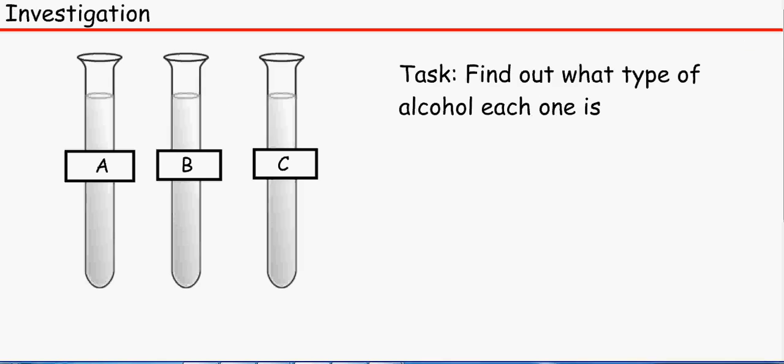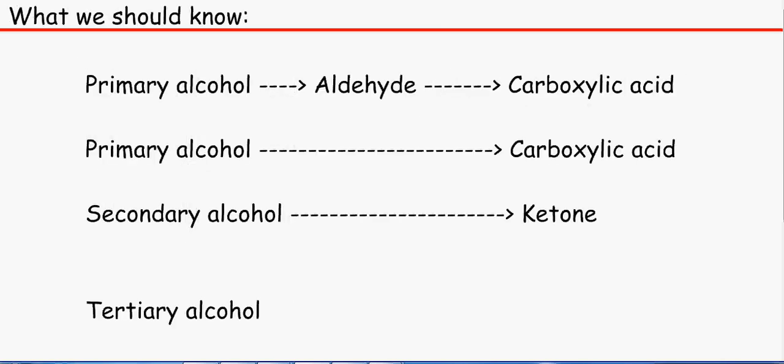So the first thing in the laboratory you're given three test tubes and your task is to find out what type of alcohol each one is. I know that you'll be thinking that you want to learn about carbonyls but alcohols do come into it.